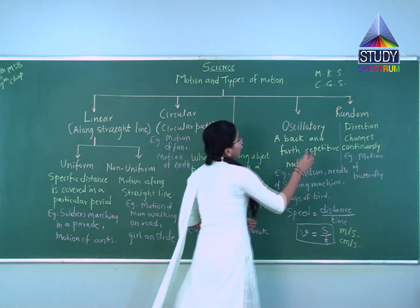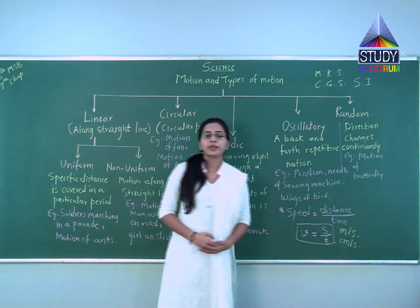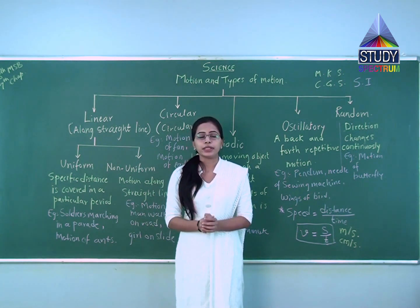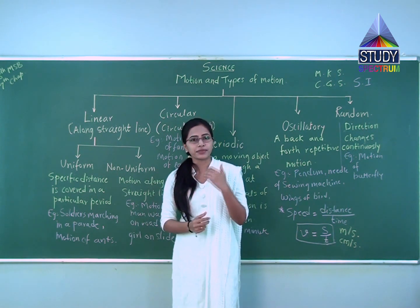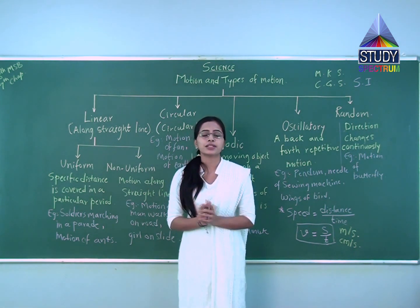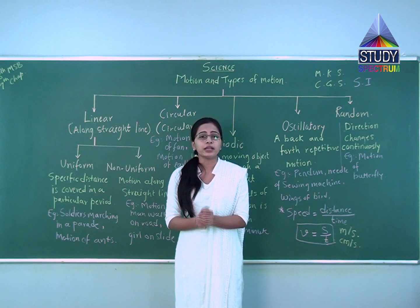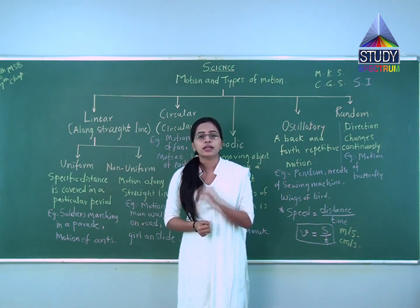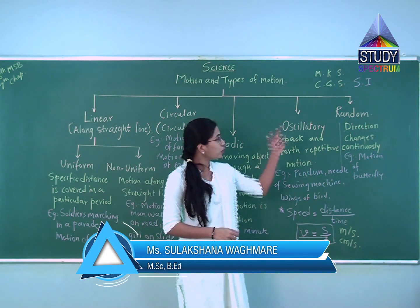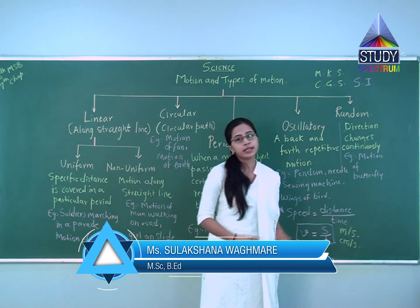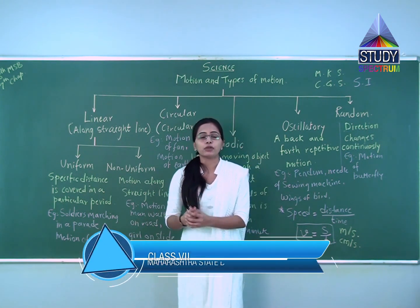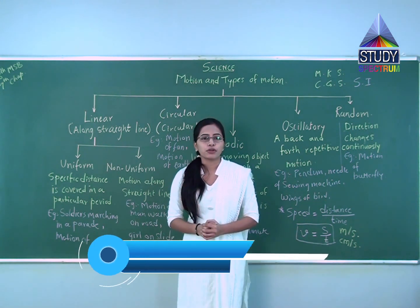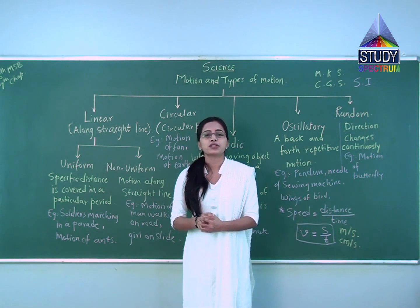We are now using the SI system — the international system of units — which is based on the MKS system. Different countries had different systems of units causing confusion, so the SI system was introduced to standardize measurements internationally. Using this system, the unit of velocity is meter per second. By using SI system for calculating velocity, measuring distances and masses, we complete our chapter on motion and types of motion. We will solve the exercise next time.